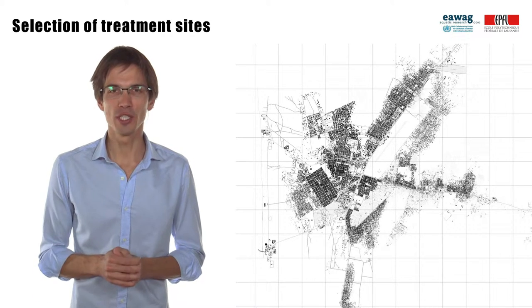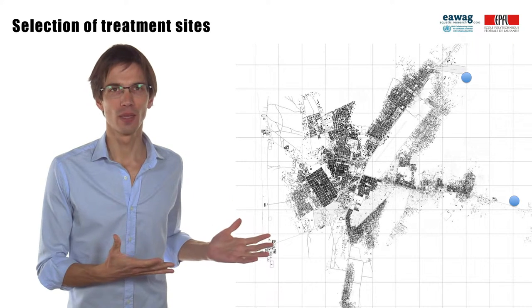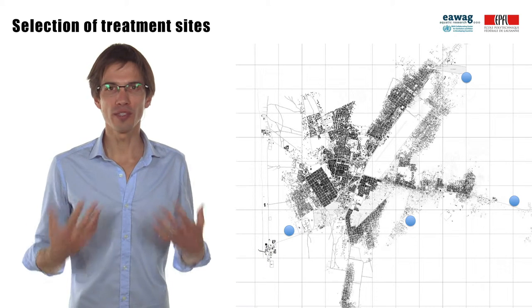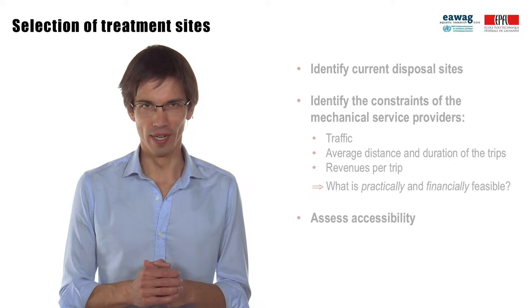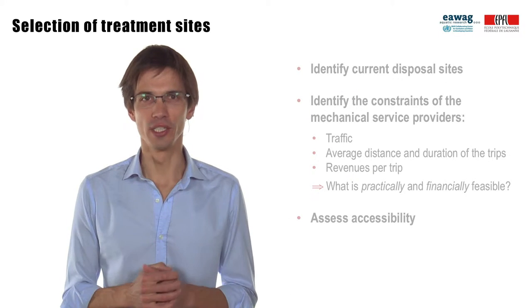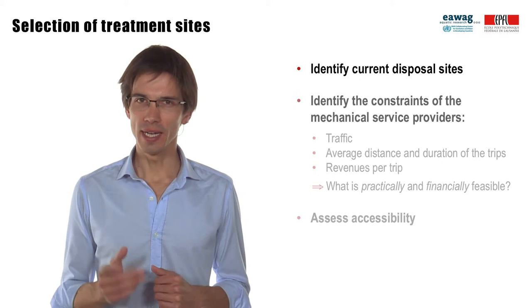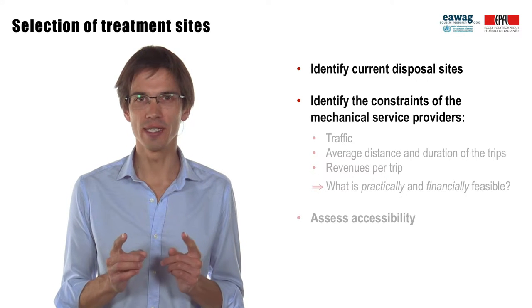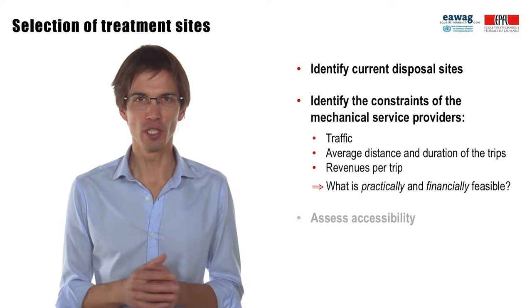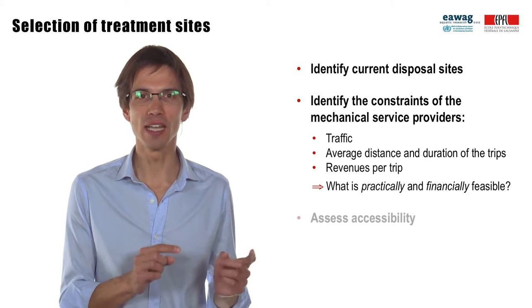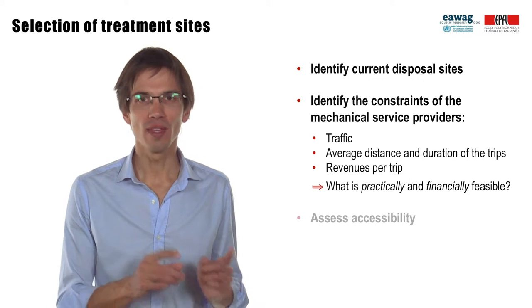Then comes the question of the level of decentralization — shall we have one or several plants? In large urban areas, it may make a lot of sense to have several plants at different locations. The mechanical service providers should be at the core of the decision: they know all about existing disposal sites, and it is crucial to identify what are the constraints of their business — problems with traffic, the average distance and duration of trips, and the money they gain for each. They are the ones who can tell what is practically and financially feasible.